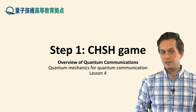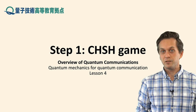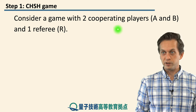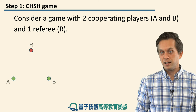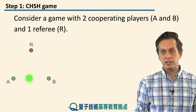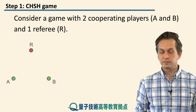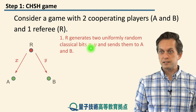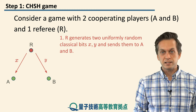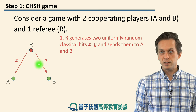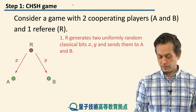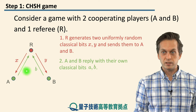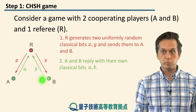Step 1: The CHSH game. We will begin with a game. The rules are the following: consider two cooperating players, A and B, trying to win a game refereed by R. The game begins with R generating two classical bits, X and Y, fully at random, and sending bit X to player A and bit Y to player B. Then players A and B reply with their own classical bits — A replies with bit A and B replies with bit B.